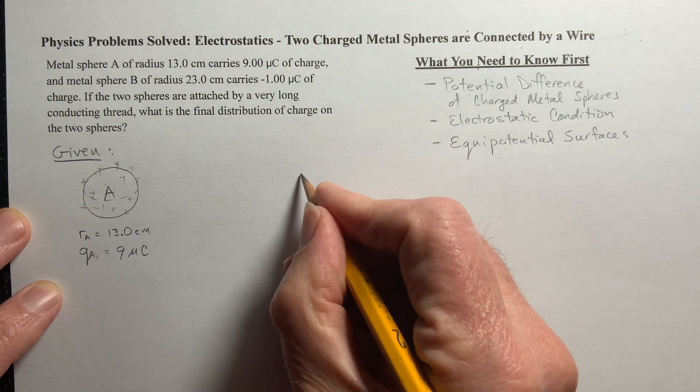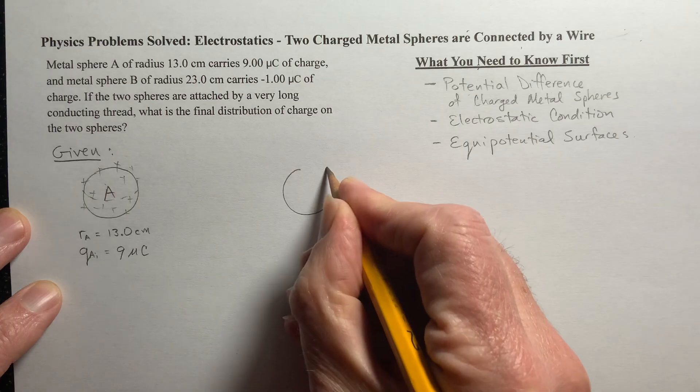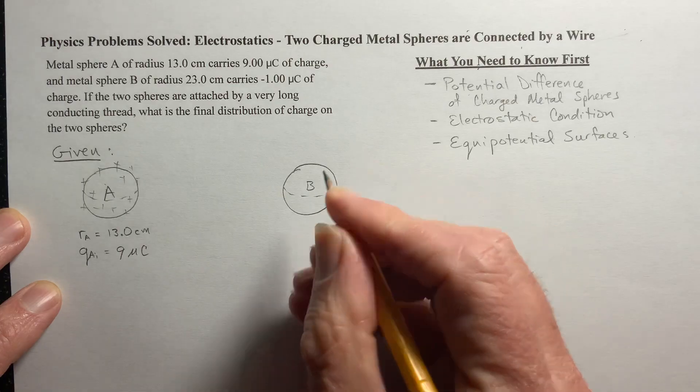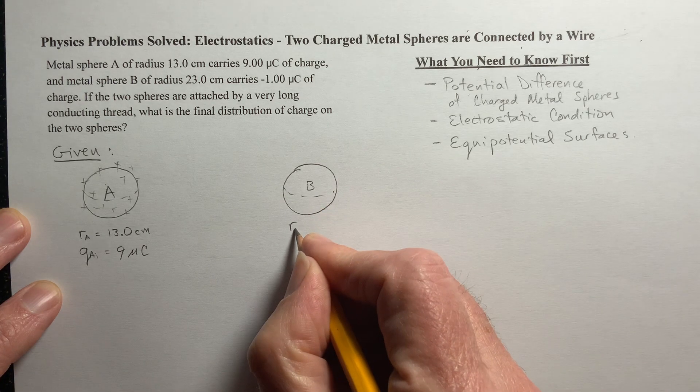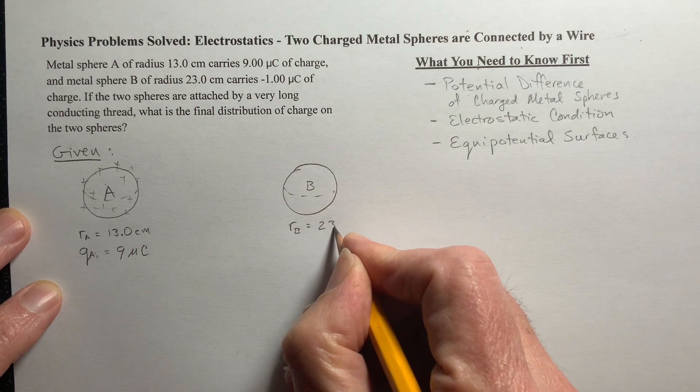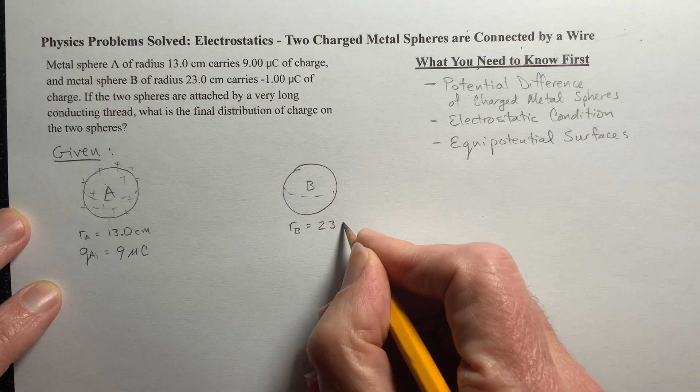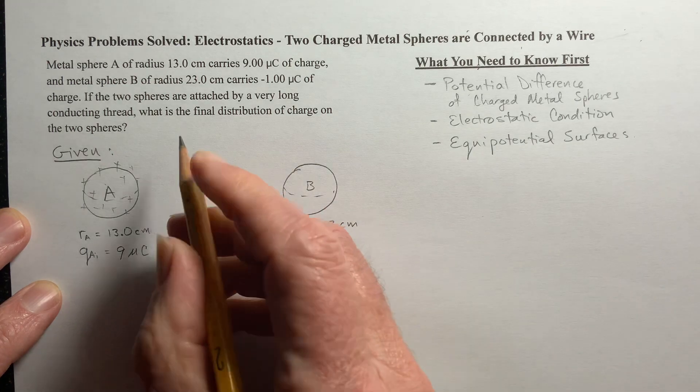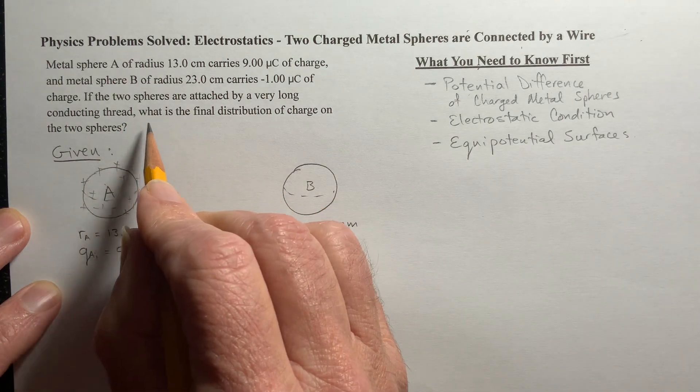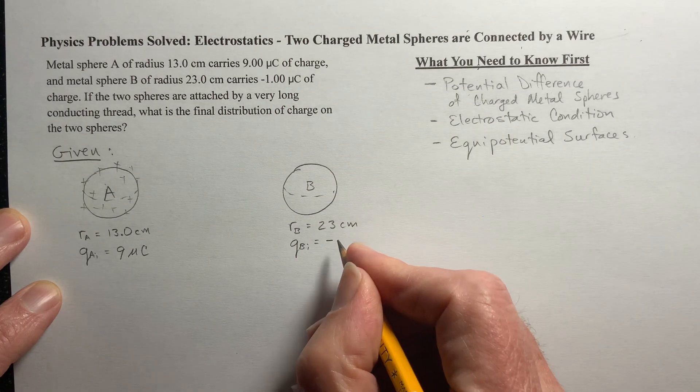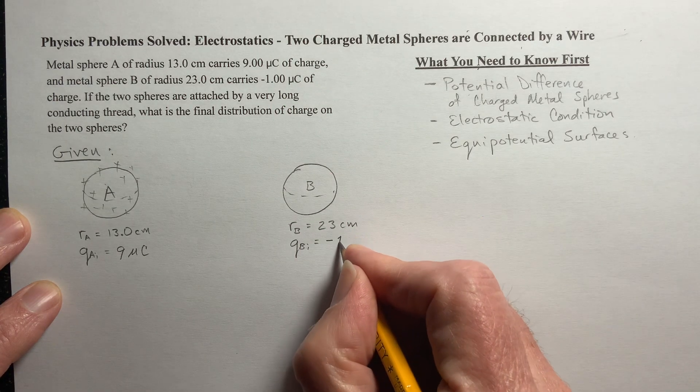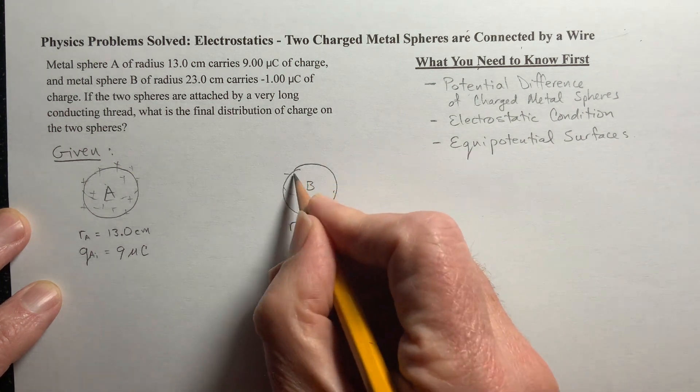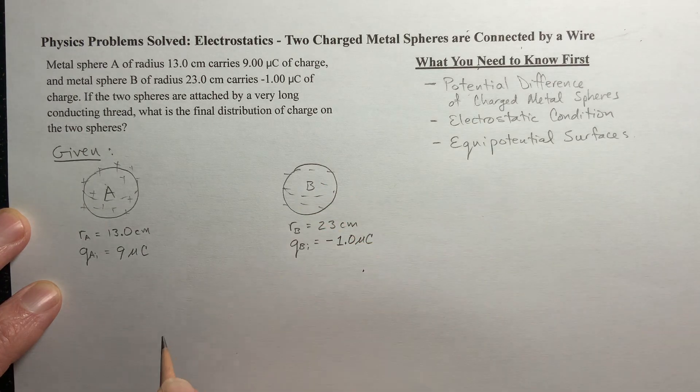And then way over here I've got a slightly bigger sphere. This is radius B, and it has a radius of 23 centimeters. And it has a charge, its initial charge is negative 1 microcoulomb. I'll just put a little bit of negative charge smeared all over that.